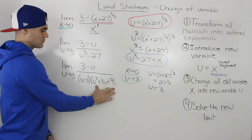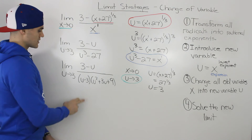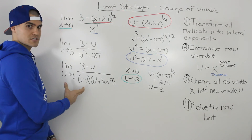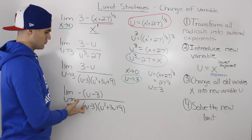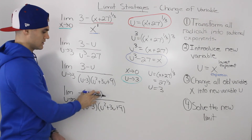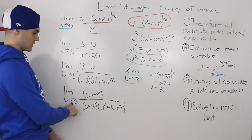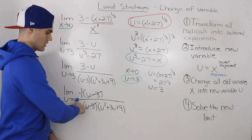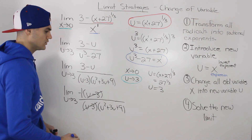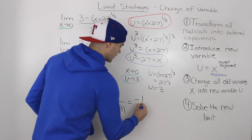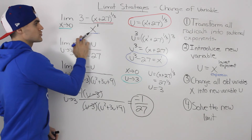Substituting u equals 3 into the second factor gives 27, so that factor is fine. Notice that 3 minus u and u minus 3 are almost the same — if we factor out a negative from the numerator, we get negative(u minus 3). Now the (u minus 3) factors cancel, leaving the limit as u approaches 3 of negative 1 over (u² + 3u + 9). Directly substituting u equals 3 gives negative 1 over 27, which is our final answer.